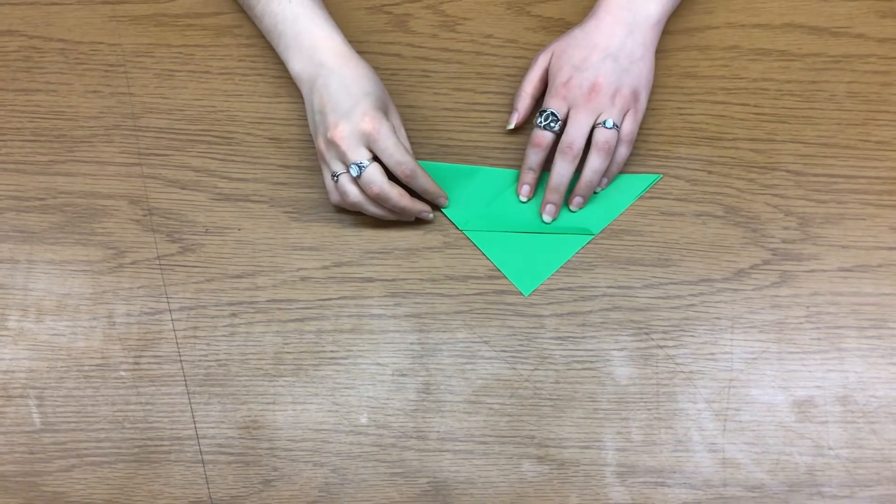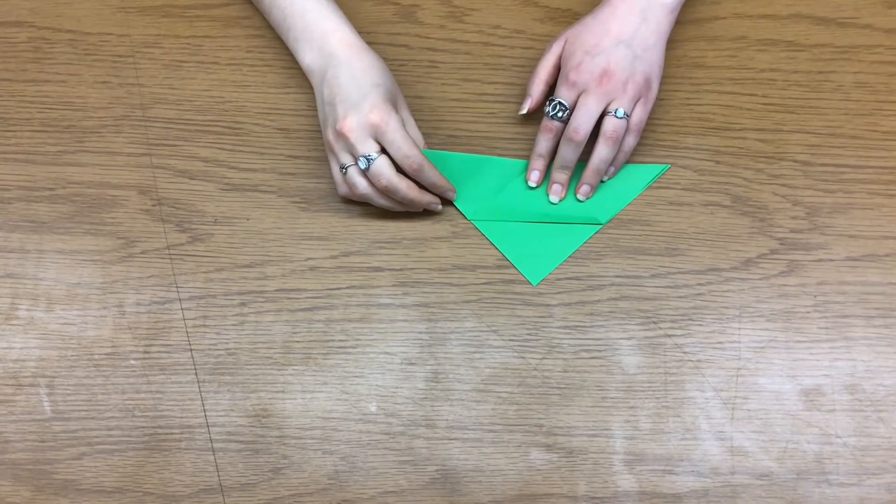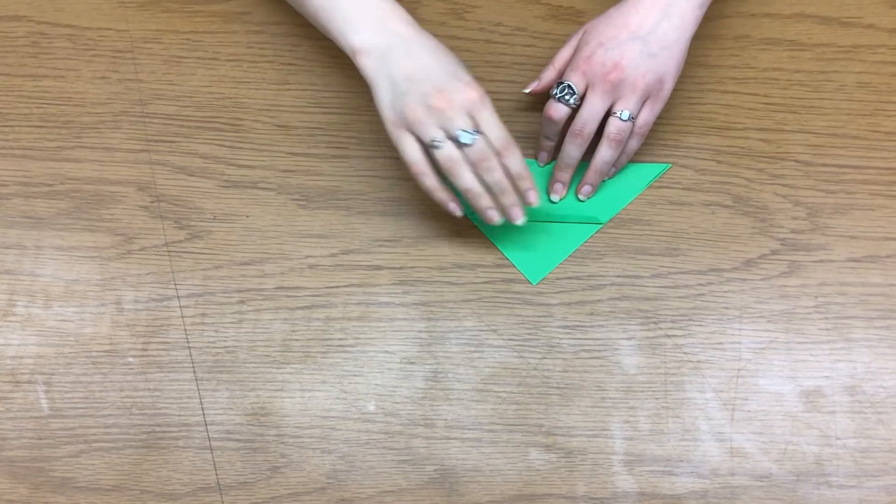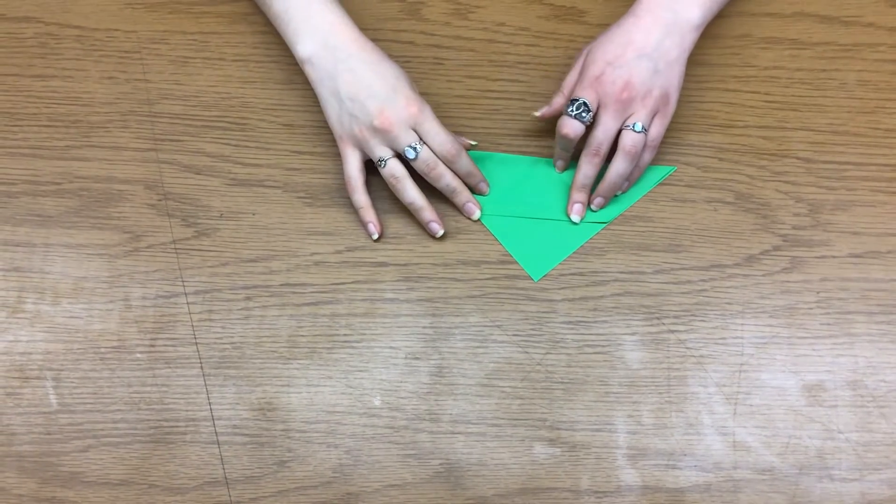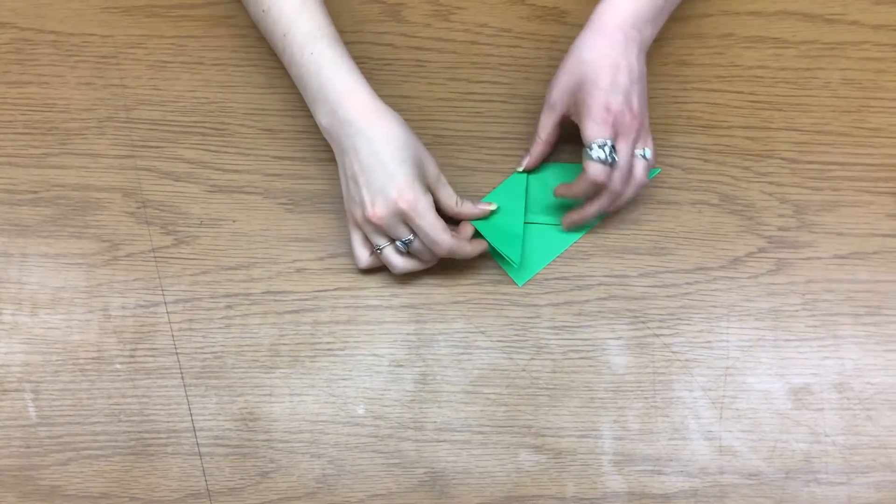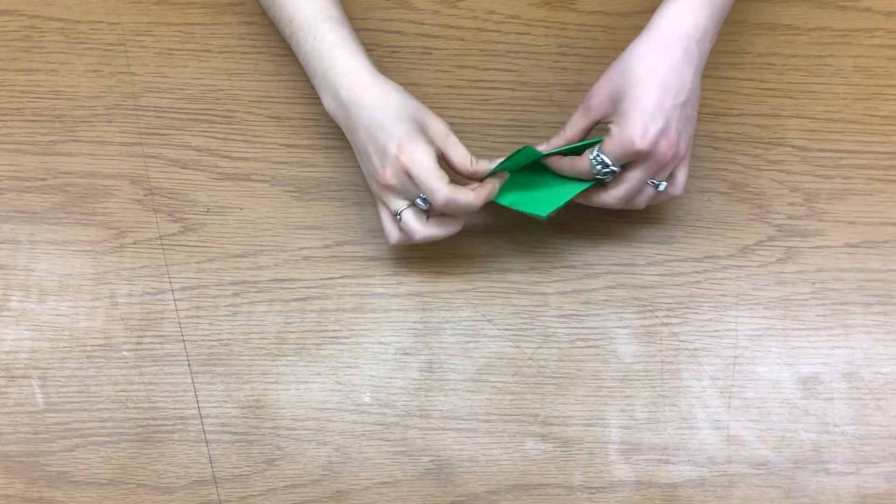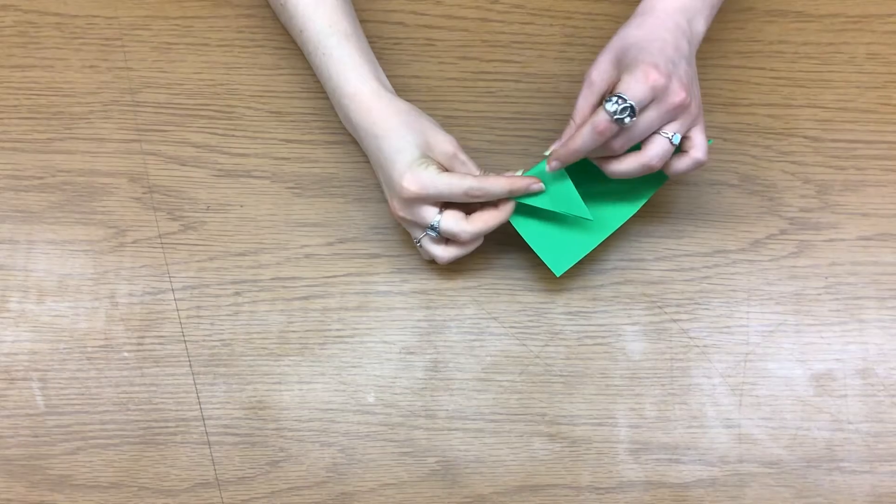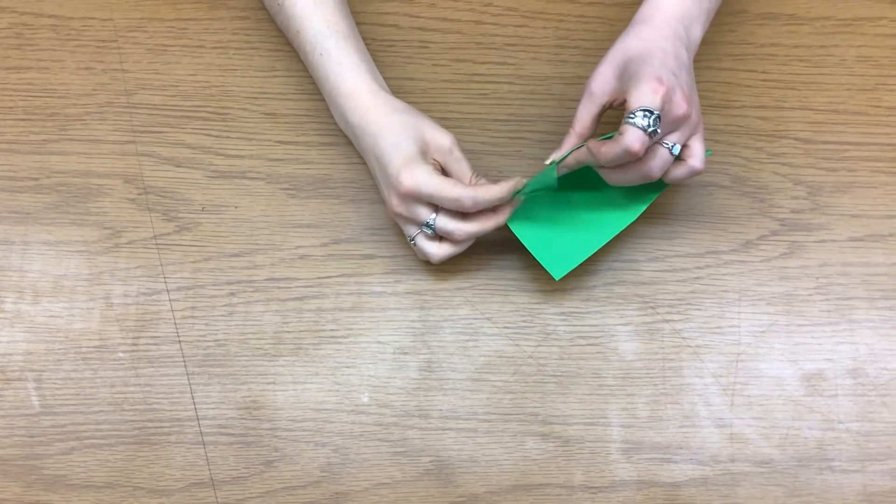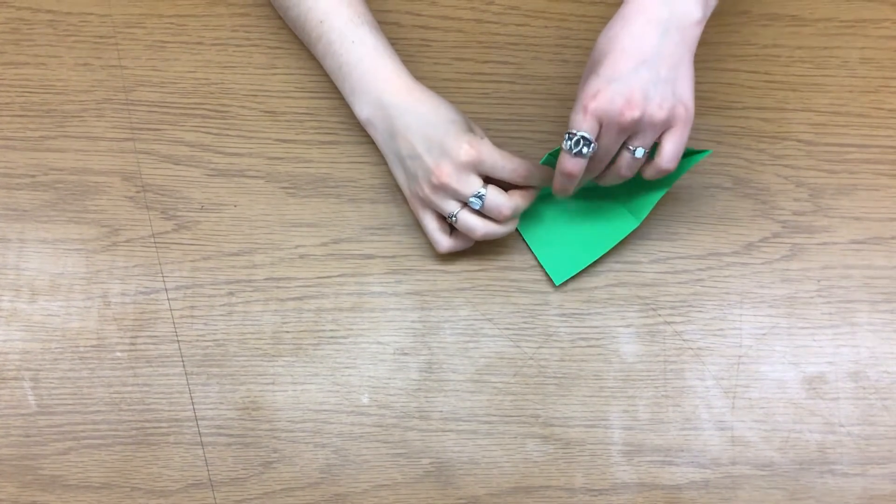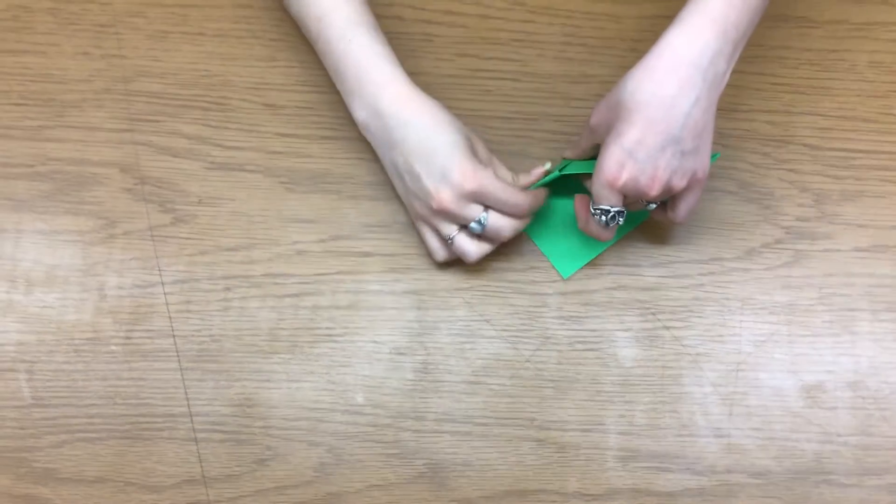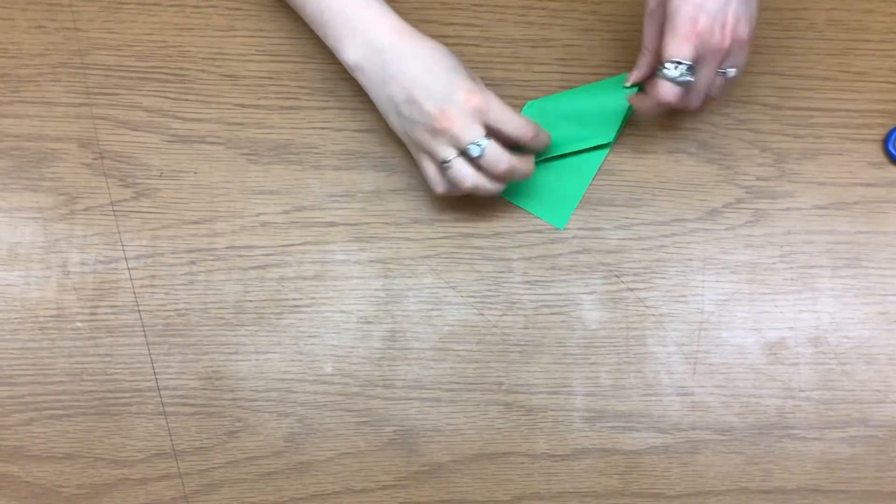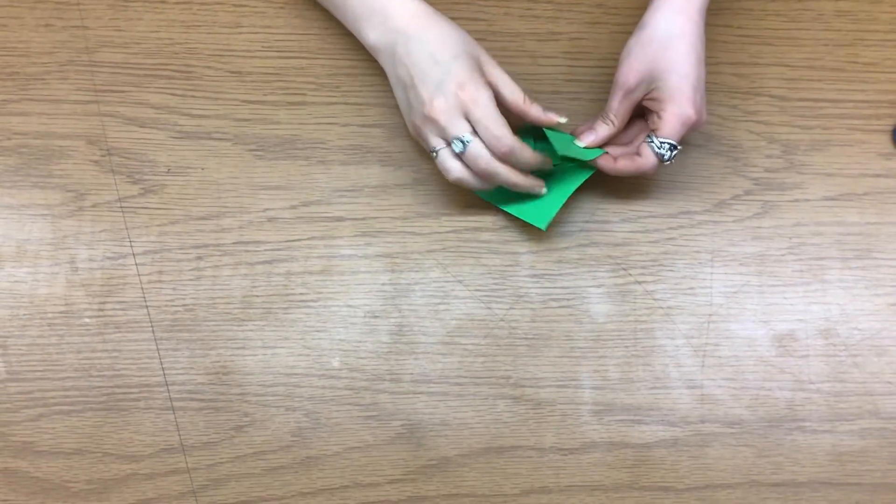All right, so we have got our corners and then we're going to take this up and fold this along this curve and tuck it in. So that's one of the trickier moves and we're going to repeat that with this side.